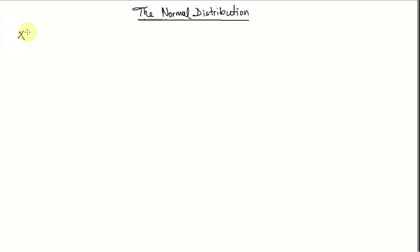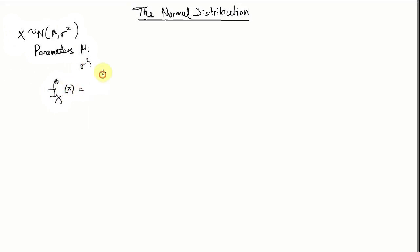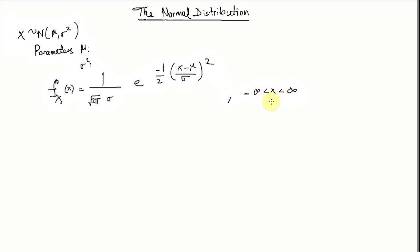Let's say we have a random variable X which follows a normal distribution. The notation is N parentheses mu comma sigma squared. This random variable has two parameters, mu and sigma squared. Its probability density function is equal to 1 over the square root of 2 pi sigma, times e to the power of negative one half times x minus mu over sigma quantity squared, and its support is from negative infinity to positive infinity. Mu denotes the mean, and sigma squared denotes the variance of this random variable.